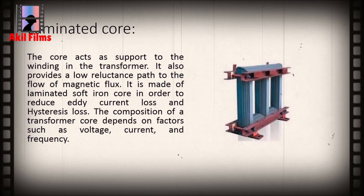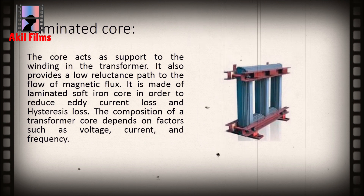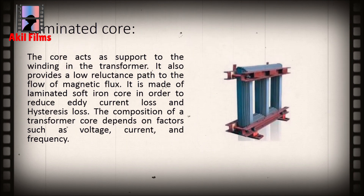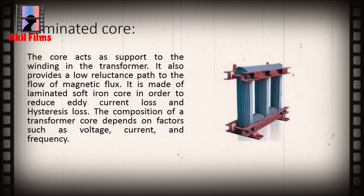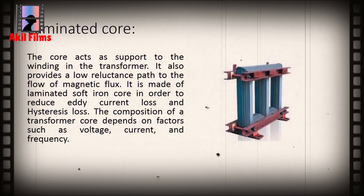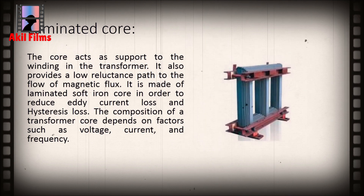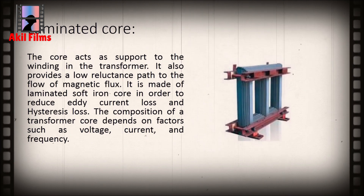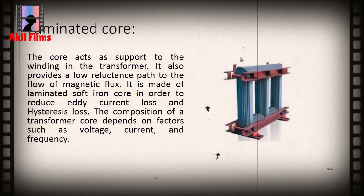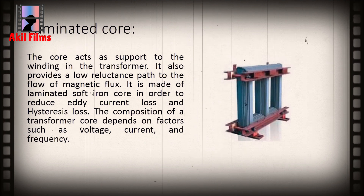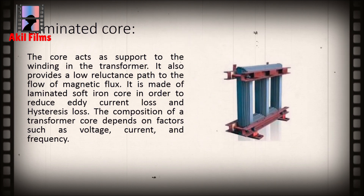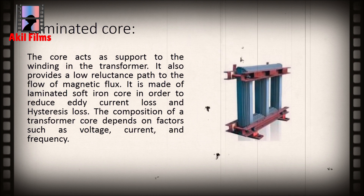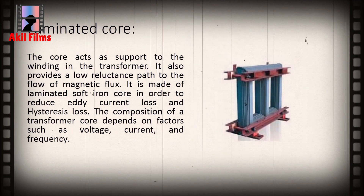The core acts as support to the winding in the transformer. It also provides a low reluctance path to the flow of magnetic flux. It is made of laminated soft iron core in order to reduce eddy current loss and hysteresis loss.